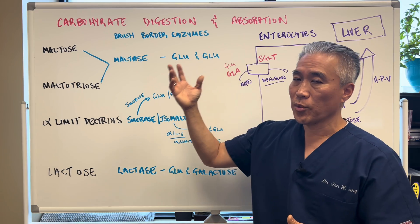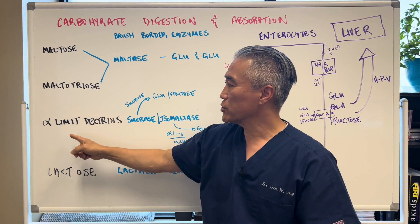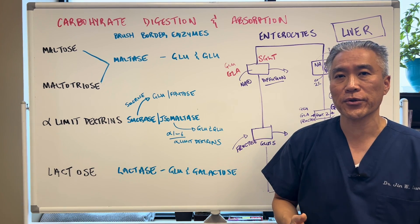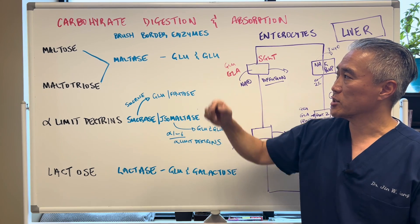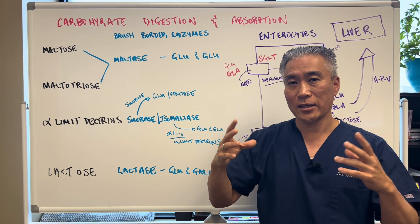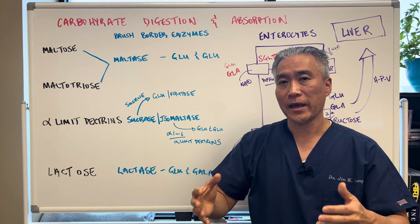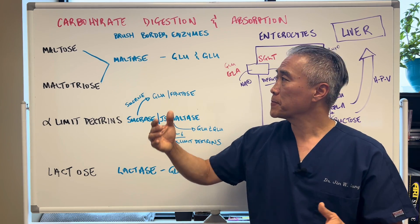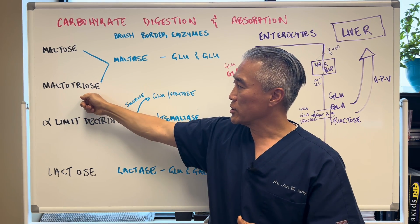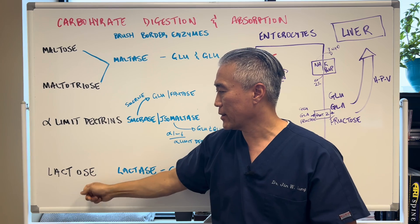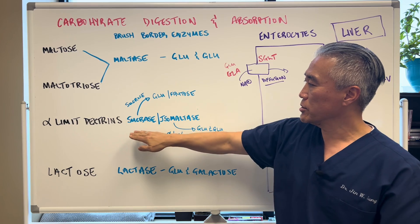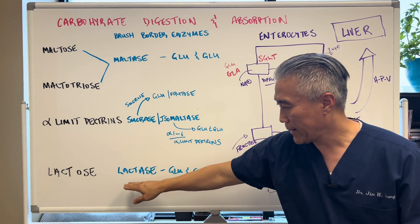Once it hits the small intestine, the maltose, maltotriose, alpha-limit dextrins, and lactose will be broken down further by what we call brush border enzymes. These enzymes are attached at the microvilli, or the enterocytes — cells in the small intestine that help break down glucose and other things. The enzymes are called maltase, sucrase, isomaltase, and lactase.